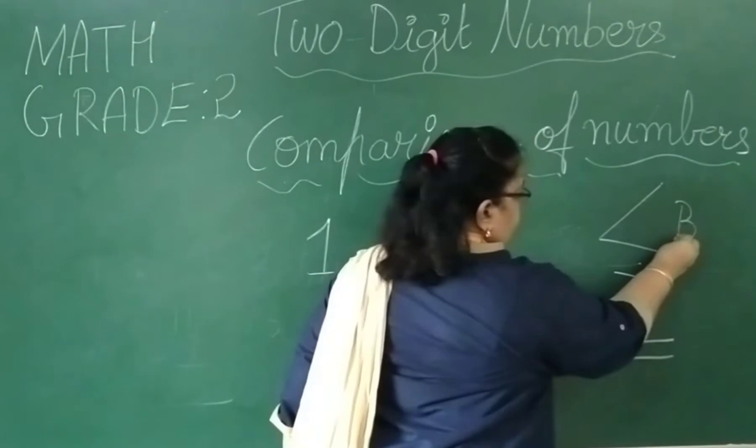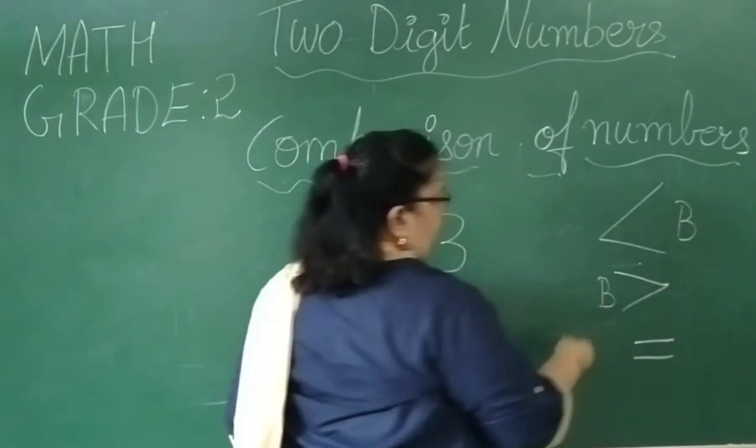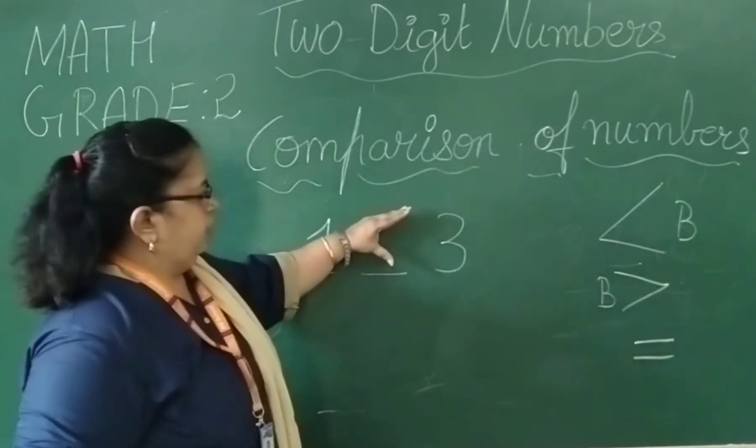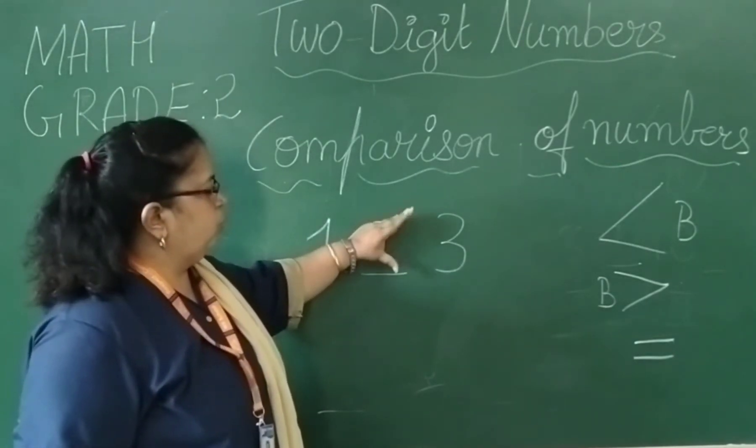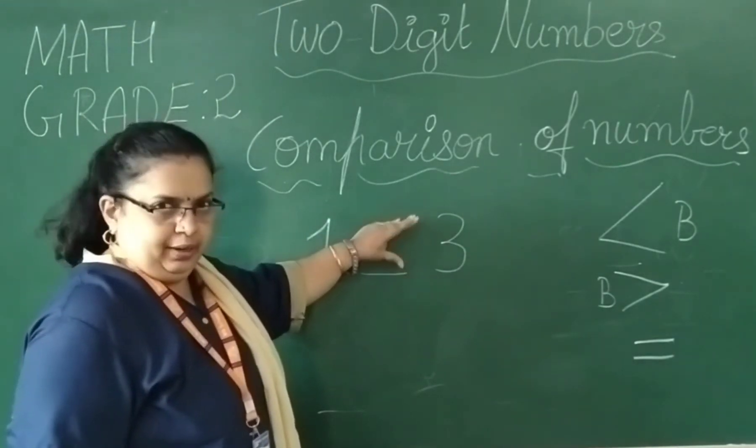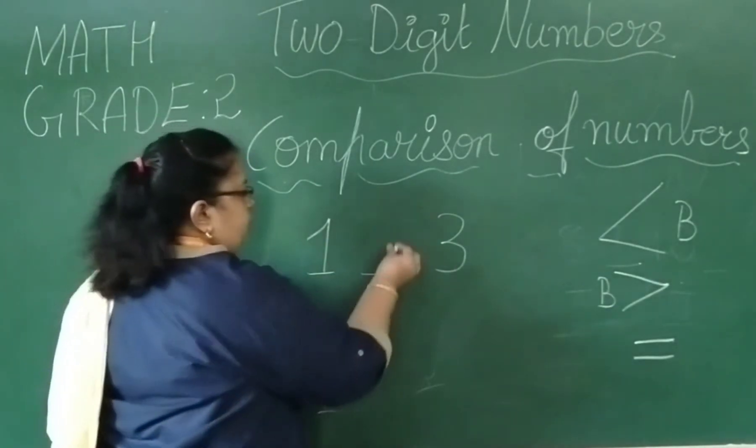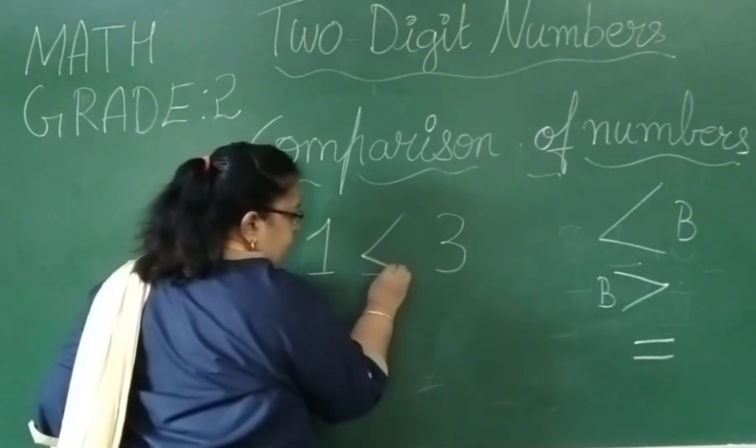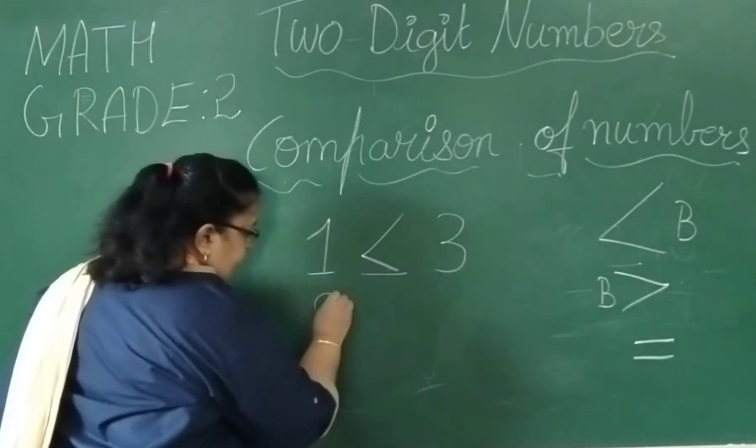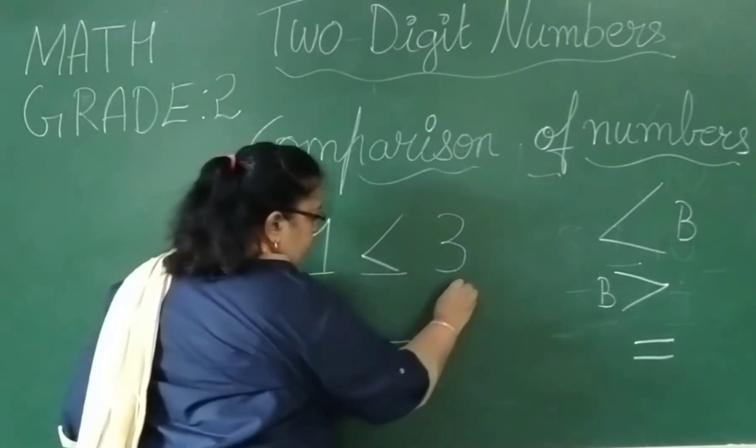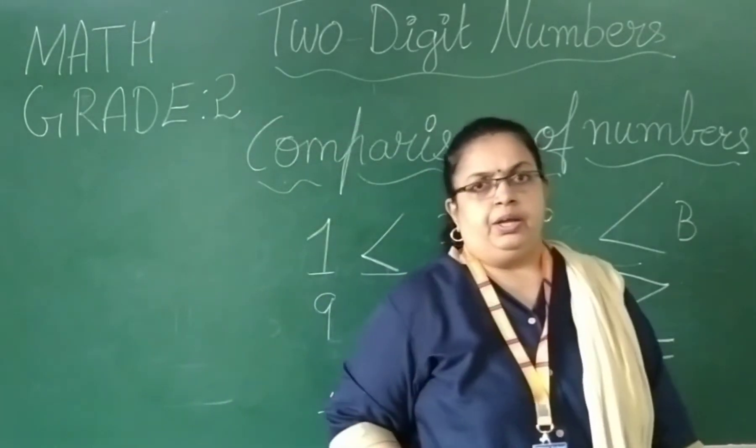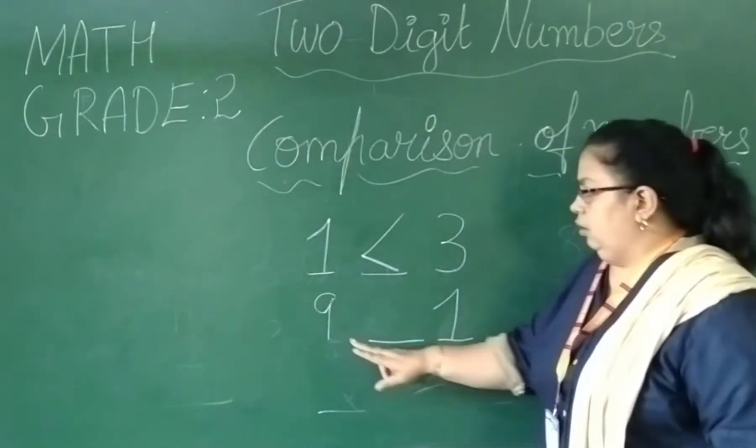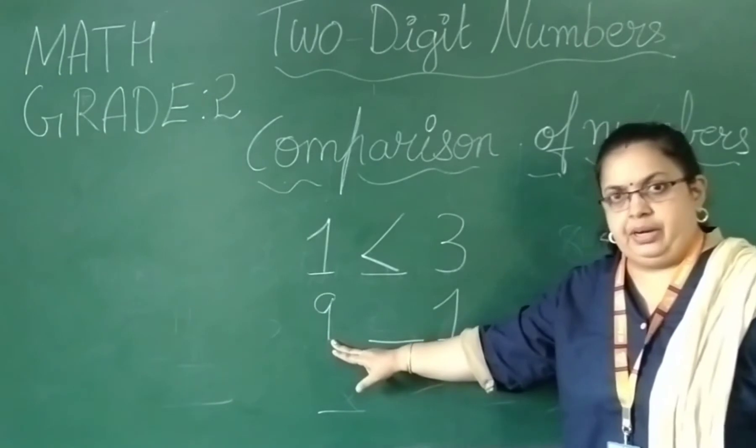Bigger number, ok. This side is bigger number, both sides will open up this side. We have to write like this. If you are getting 9 and the other 1, so how are you going to do? If you are getting 9 and 1, this is the bigger number, right?